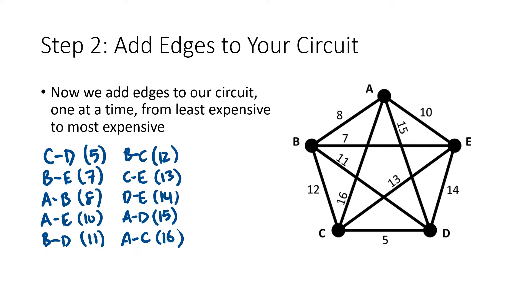Here's my list in order from lowest cost to highest cost. Now we're going to add edges to our circuit one at a time from least expensive to most expensive. Our cheapest edge is from C to D, so that's the first edge we add. Next up is the edge from B to E which costs 7, so I'm also going to add that. Notice that edge isn't connected to the one I already have, but that's okay — eventually I'll have constructed a Hamiltonian circuit. Next up is the edge from A to B, which costs 8, so I'm going to add that.